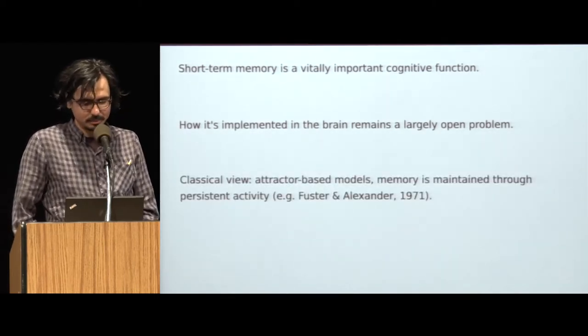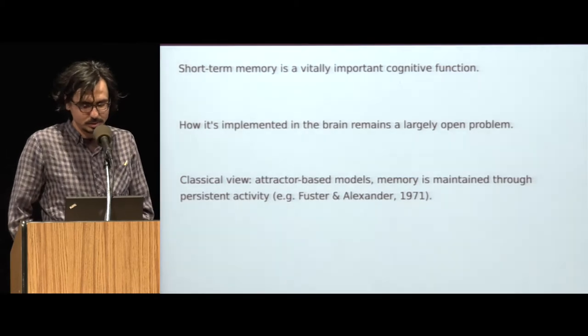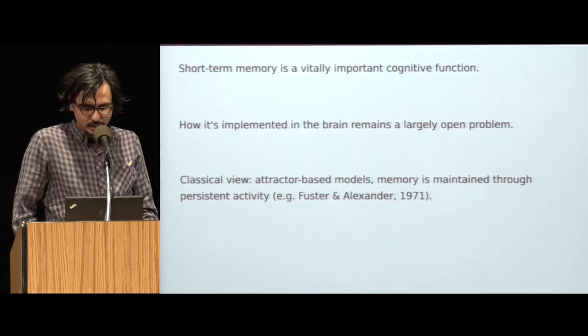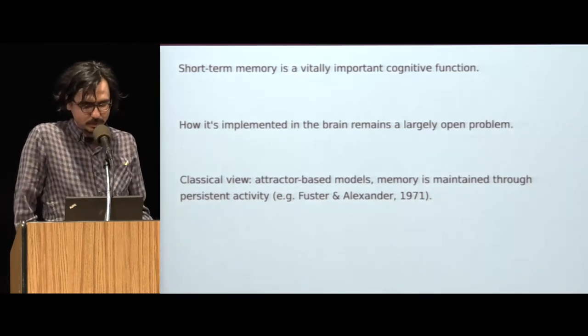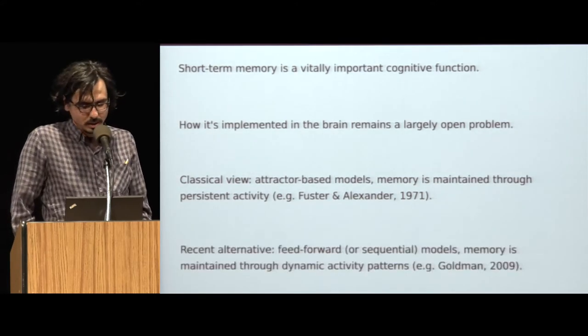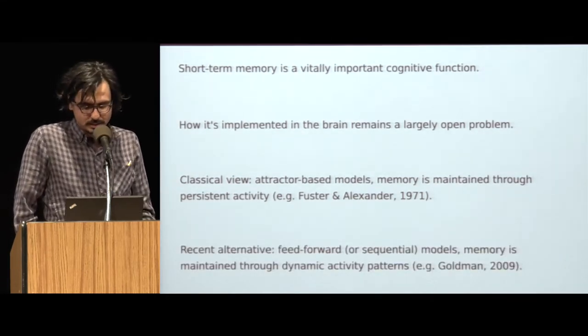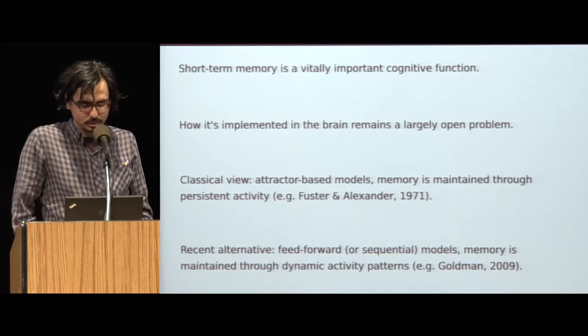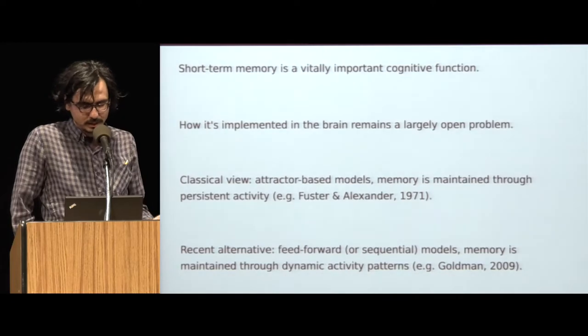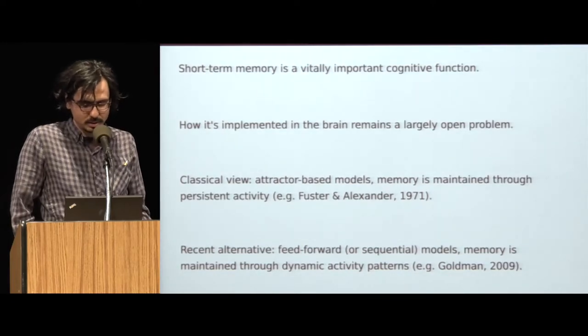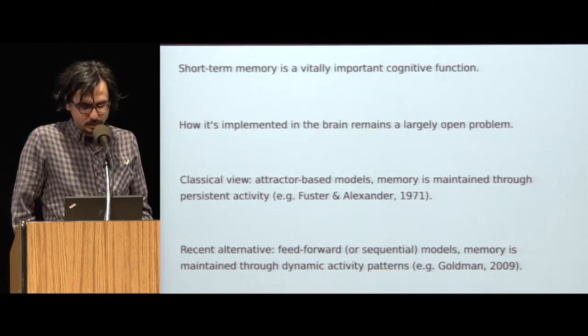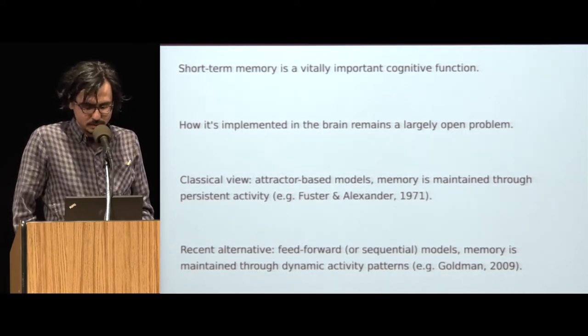The classical and perhaps the most natural view of how short-term memory might be implemented in neural circuits relies on the idea of an attractor. In this view, memory is maintained through persistent activity of individual neurons. However, it's been recently pointed out that persistent activity of individual neurons is actually not necessary for short-term memory. Memory can also be maintained through dynamic activity patterns where individual neurons are active only transiently. Experimental evidence for both of these models has been reported previously.